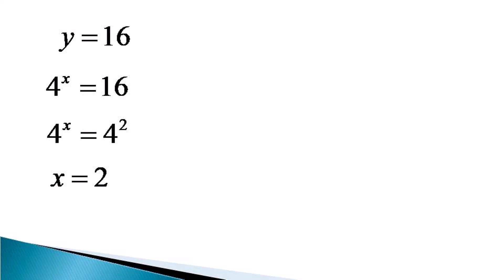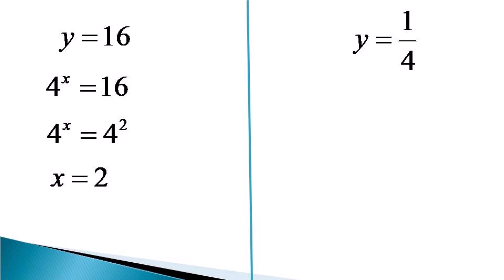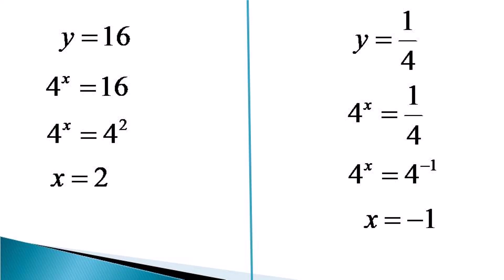Now considering the second value of y, which is equal to 1 by 4, and substituting back in terms of x, we get 4 raised to the power x is equal to 1 by 4. Representing 1 by 4 as 4 raised to the power minus 1, the equation becomes 4 raised to the power x is equal to 4 raised to the power minus 1. Since the bases are equal, the indices must also be equal, giving the second value of x as equal to minus 1. So the given disguised quadratic equation gives us two solutions: x is equal to 2 and x is equal to minus 1.